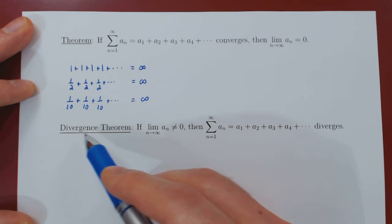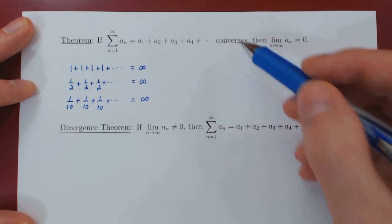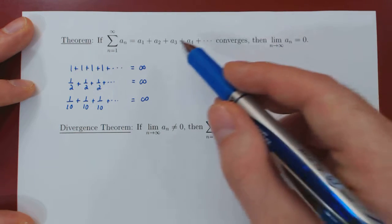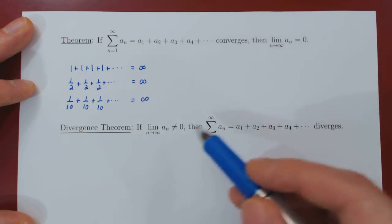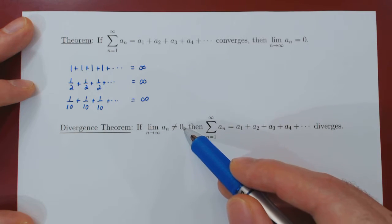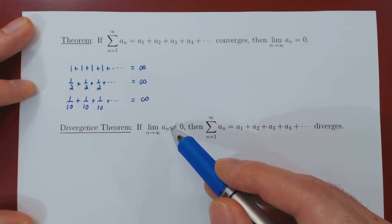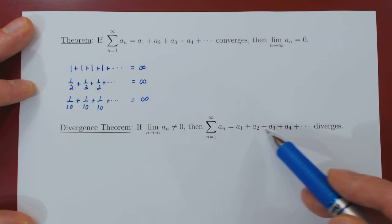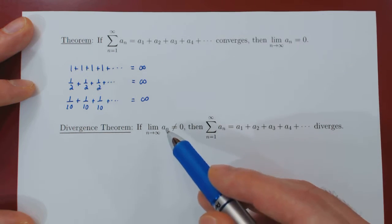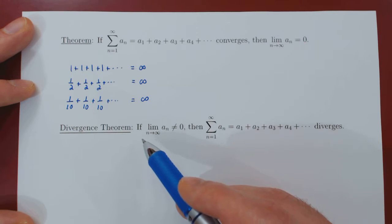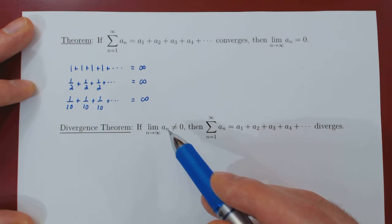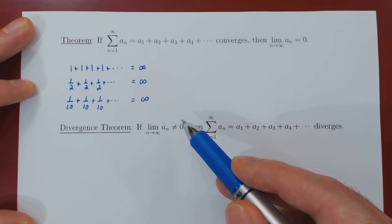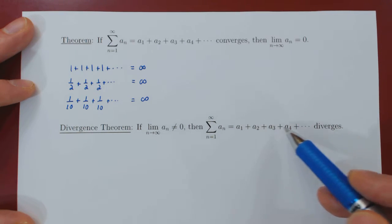Now we can look at the so-called divergence theorem, which is a simple consequence of this result — also called the contrapositive. If we negate both statements and invert them: if the terms that we're summing over do not shrink to 0 as n tends to infinity, then they are too big, and so the corresponding series diverges. If the terms don't approach 0, it is impossible to add infinitely many terms and obtain a real number, so the series will diverge.